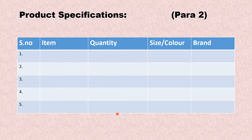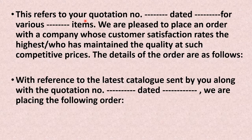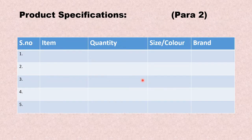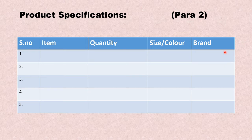In paragraph two, you have to make a table and give product specifications. You are not to give any heading there. After writing 'the details of the order are as follows,' straightaway make the table. In the table, all details should be there — nothing should be left for guesswork of the person packing your things. The item required, quantity, size, color, brand — whatever is appropriate. If another column is needed for your item, make another column. Everything should be clear.